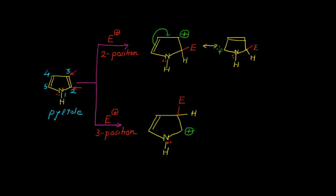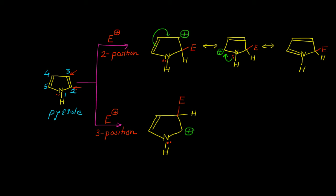The important change is the delocalization of this positive charge from position 3 to position 5. At carbon number 5 we have a positive charge, which also gets delocalized into the ring. The lone pair of electrons gets donated towards nitrogen and carbon, giving the next resonating structure with a carbon-nitrogen double bond. The positive charge which was on position 5 now goes onto the nitrogen.